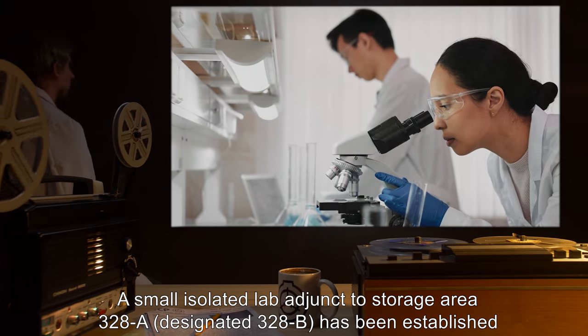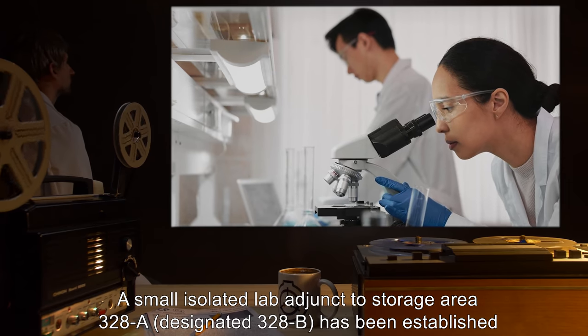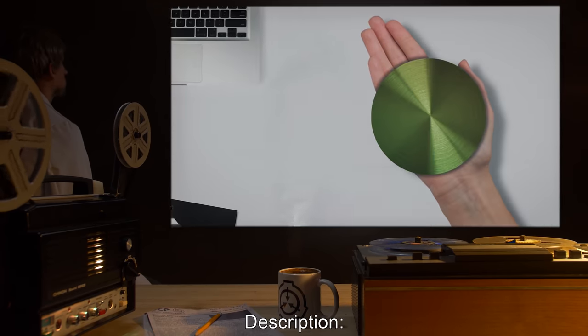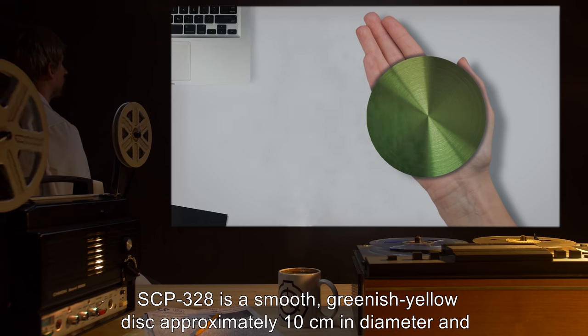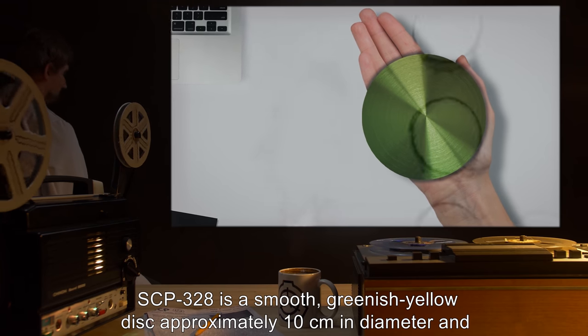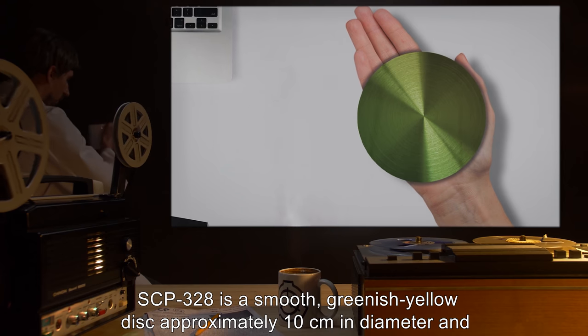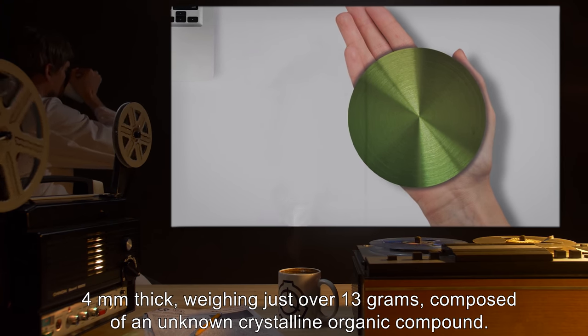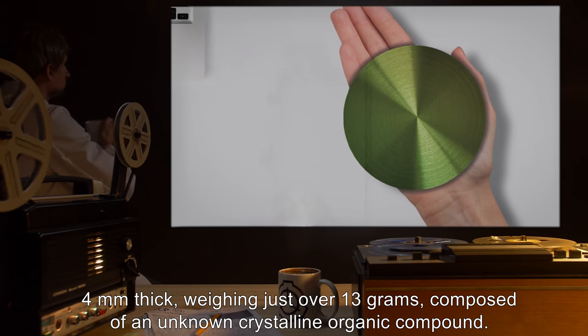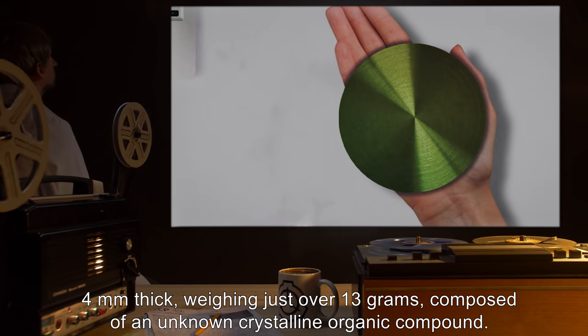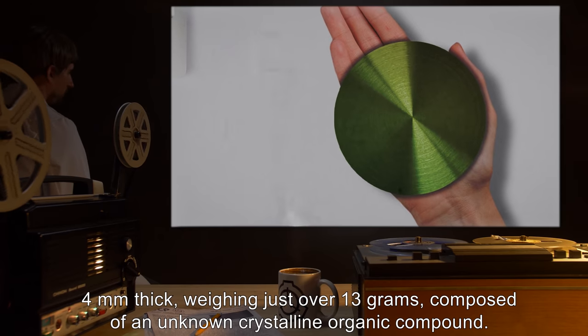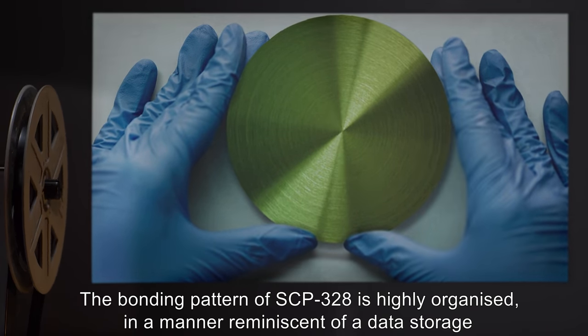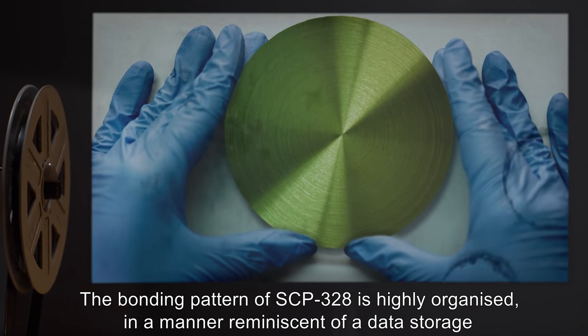Description: SCP-328 is a smooth, greenish-yellow disc, approximately 10 centimeters in diameter and 4 millimeters thick, weighing just over 13 grams, composed of an unknown crystalline organic compound. The bonding pattern of SCP-328 is highly organized in a manner reminiscent of a data storage or retrieval device.